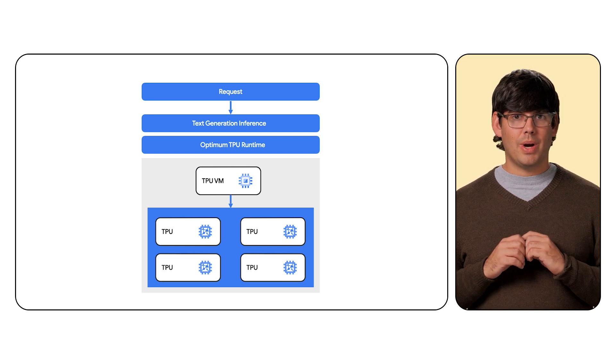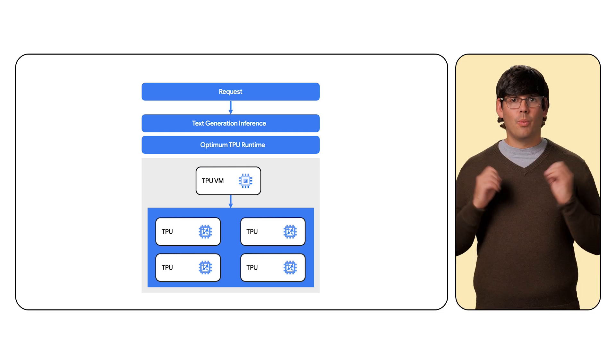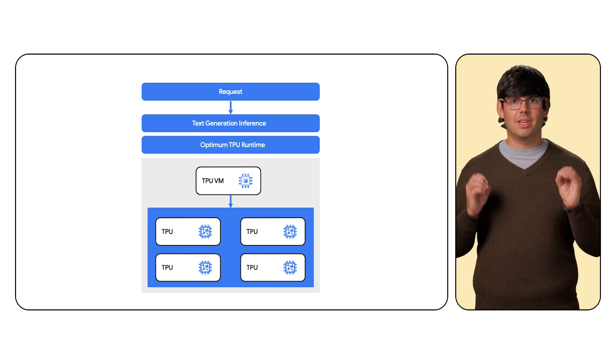Once we send the request, we should get our response back. With that, we have set up our first endpoint running inference to generate text using Gemma 2. This is just one way we could have set up an endpoint for running inference with a model to generate text with the AI hypercomputer.